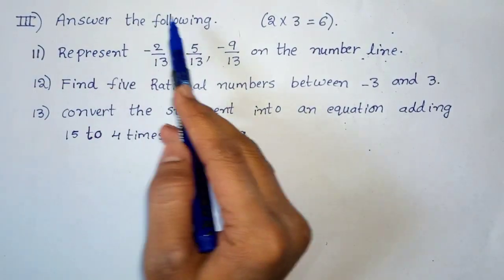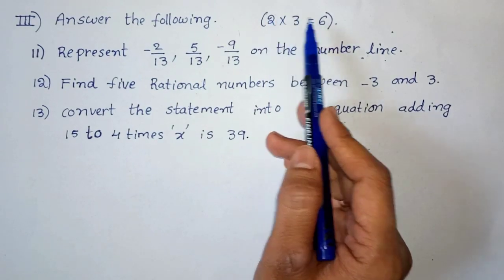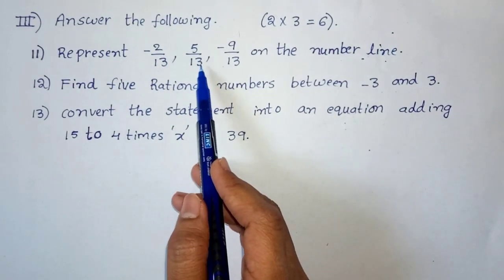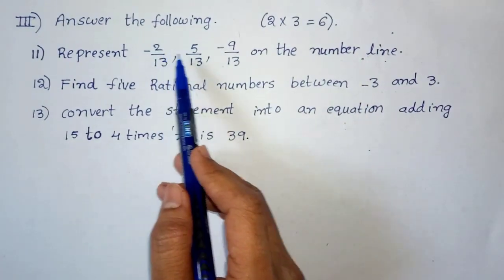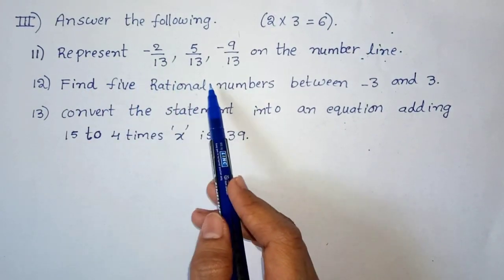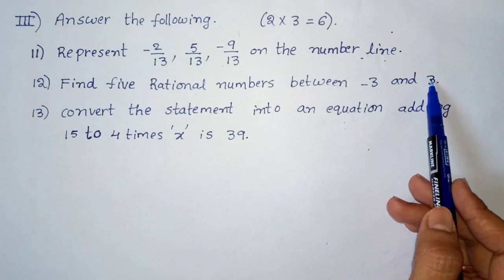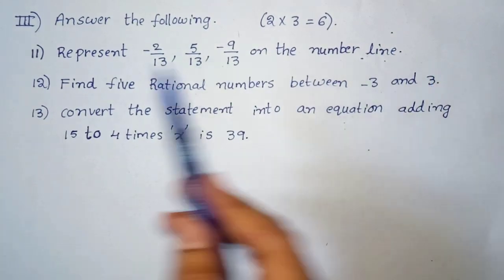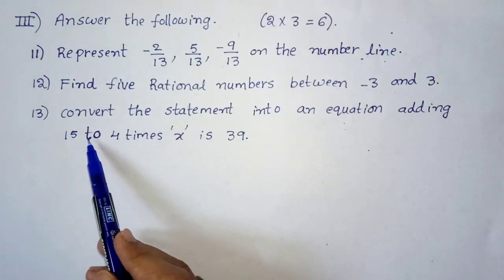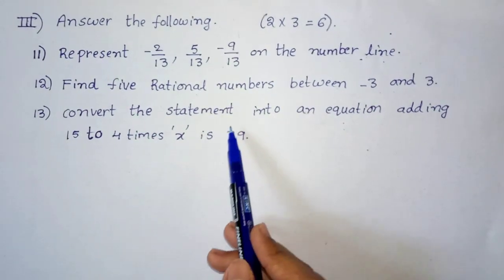Third section: answer the following — 3 questions worth 2 marks each, total 6 marks. Question 11: represent −2/13, 5/13, and −9/13 on the number line. Question 12: find 5 rational numbers between −3 and 3. Question 13: convert the statement into an equation — 'adding 15 to 4 times x is 39.'